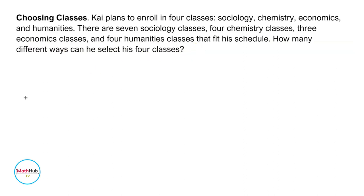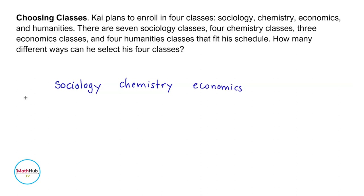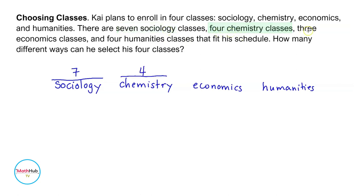We will solve this by applying the fundamental counting principle. To determine the total number of choices Kai has, we will list down the number of choices for each class. He has seven choices for Sociology classes, four choices for Chemistry classes, three choices for Economics classes, and four choices for Humanities classes.